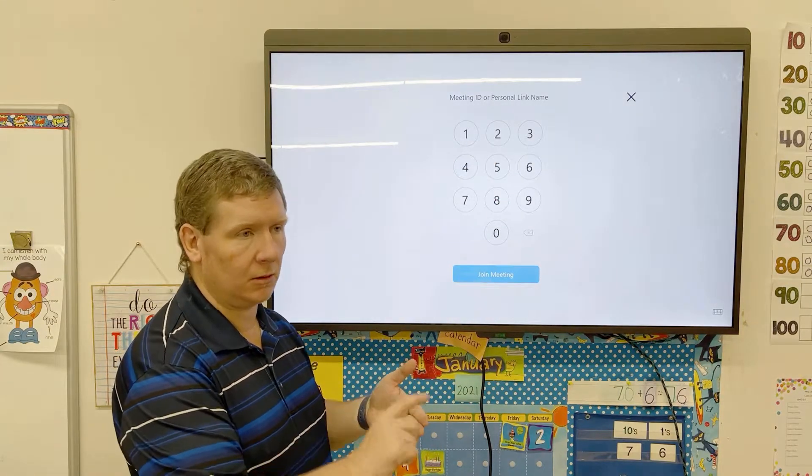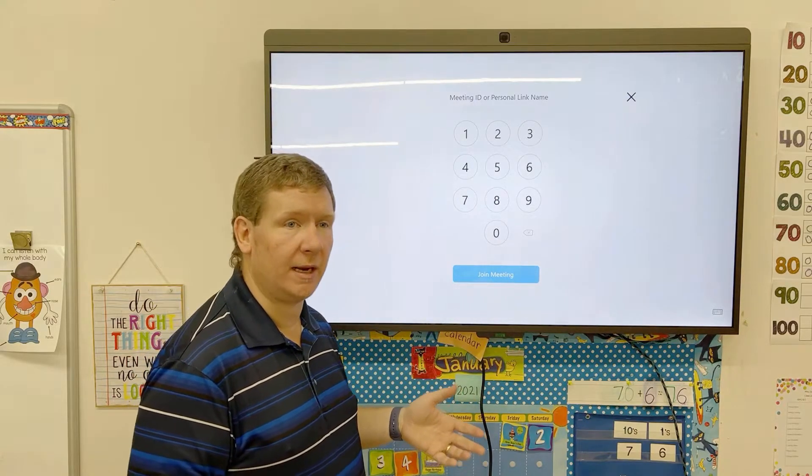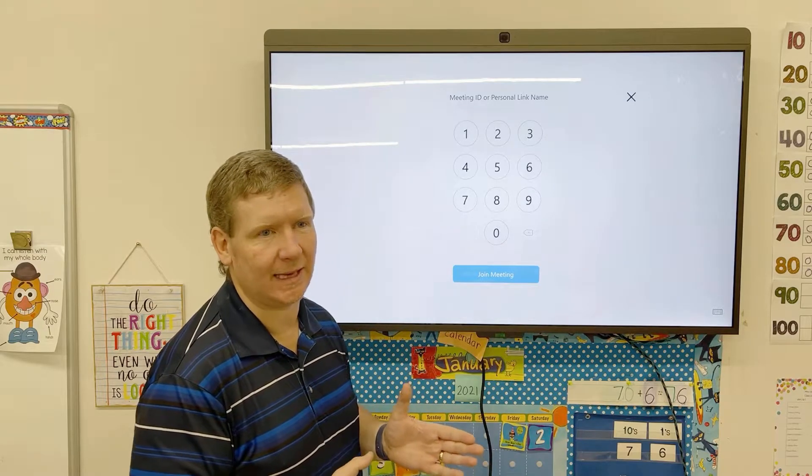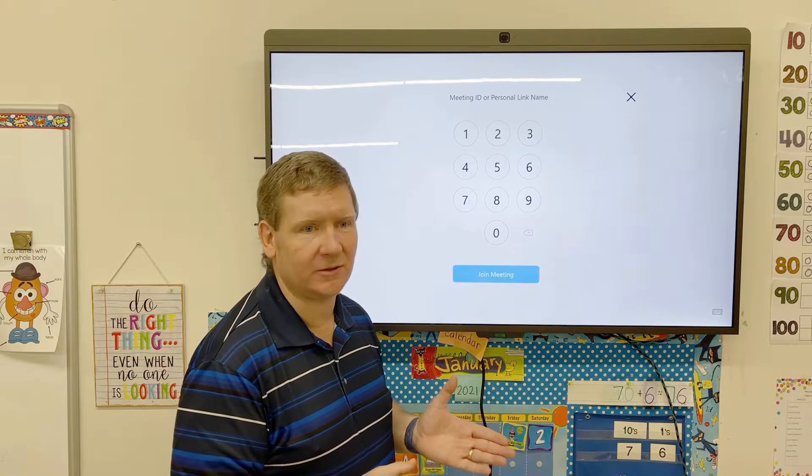So you'll go to that email, look for the meeting ID, you punch it in, you hit Join Meeting. If the meeting has a passcode, which I hope it has because that's good security, it keeps all those Zoom bombings from happening.